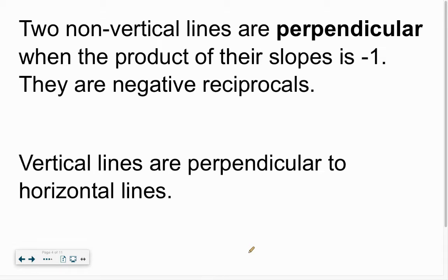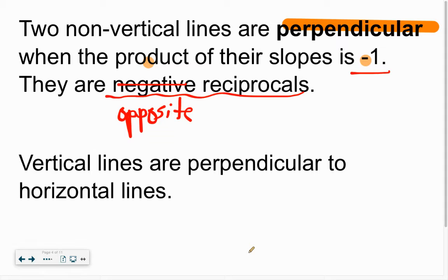Now, two non-vertical lines, so these cannot be vertical, are called perpendicular when their product is negative 1. A better way to say it is they're negative reciprocals, or rather, I prefer the word opposite reciprocals. If you take the two slopes and multiply them, you're going to get this answer of negative 1. But what opposite reciprocal means is just this.